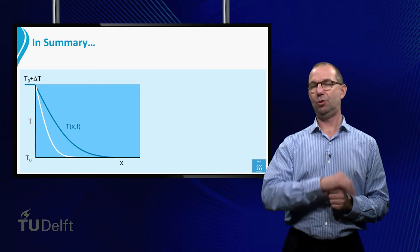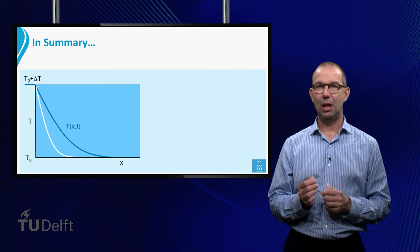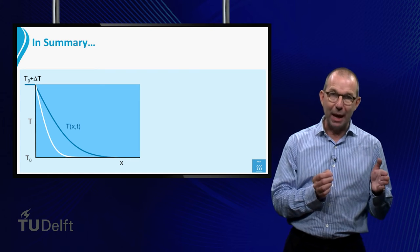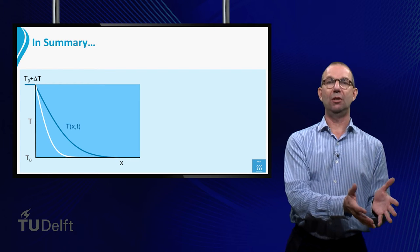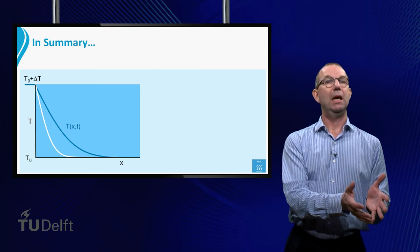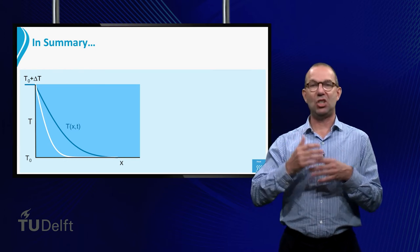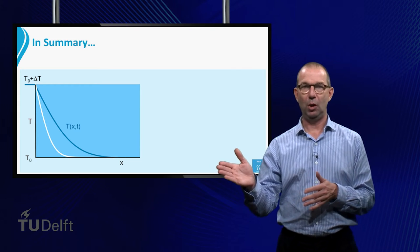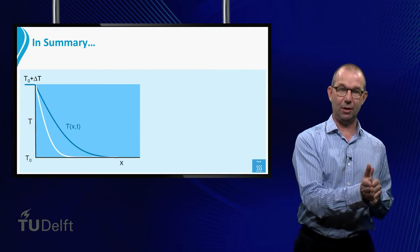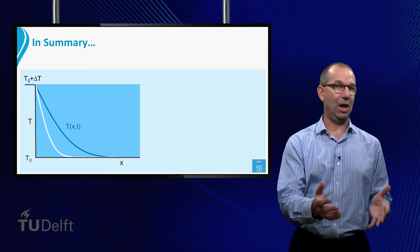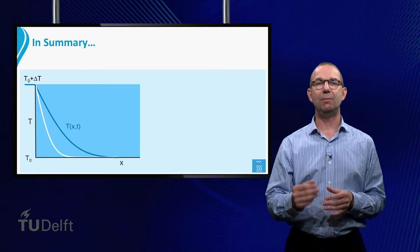It is important to realize that our analysis assumes that the right hand side of the plate is still at the original temperature T0. It has not yet changed its temperature. Obviously, at some point in time the heat will also have reached the right hand side and our analysis breaks down. We will deal with that in the next lecture.